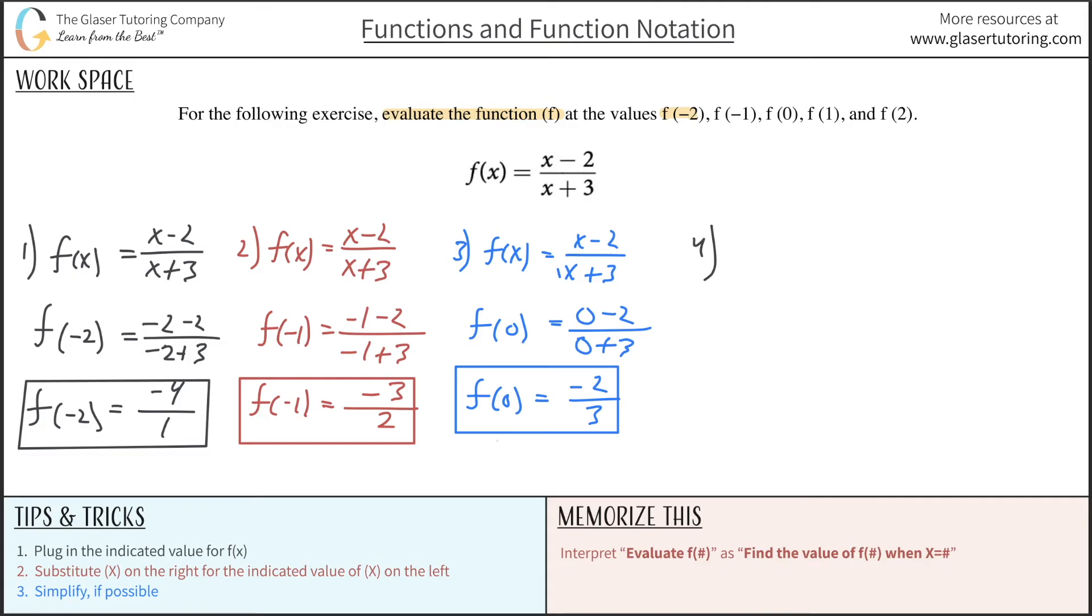I'm just going to work these last ones quickly, but you can by all means do the substitutions. This is f(1), so this is going to equal negative 1 over 4, and that is that answer.